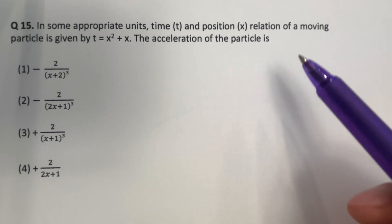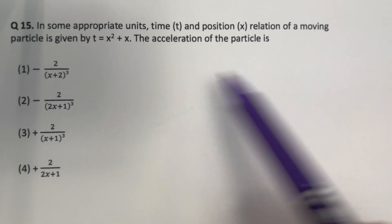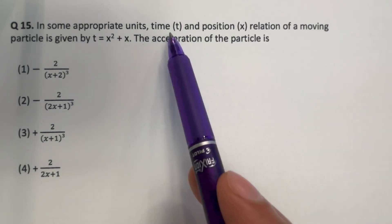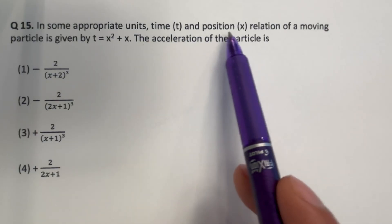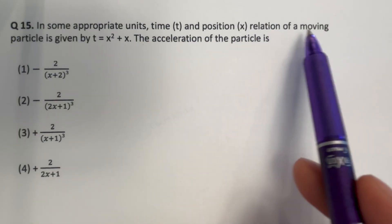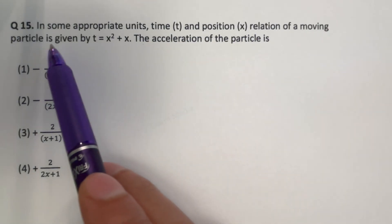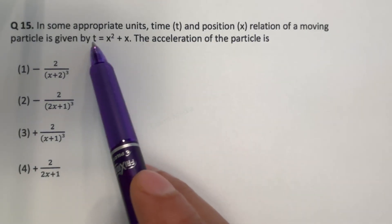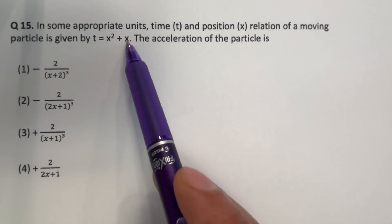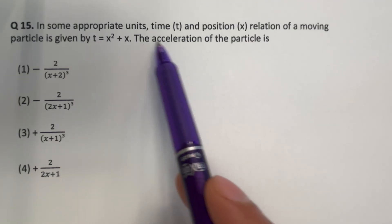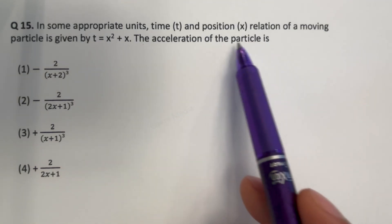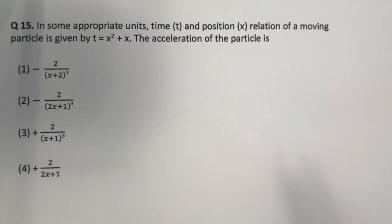Hello everyone, here is a question from physics. In some appropriate units, the time t and position x relation of a moving particle is given by t equal to x squared plus x. In that case, what is the acceleration of the particle?